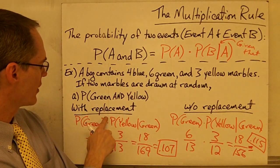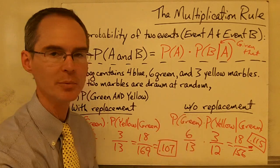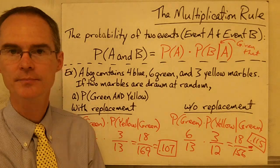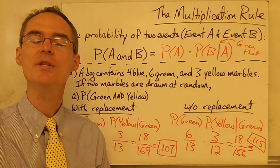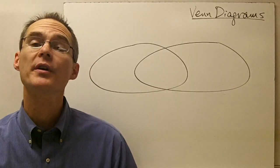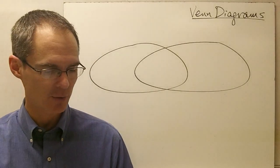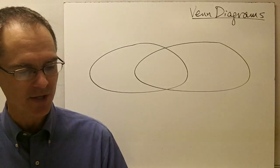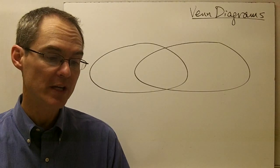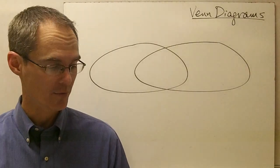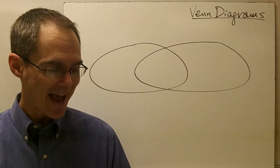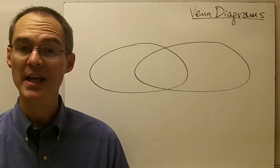Now let's look at something called Venn diagrams. The example says: 21 students at Riverside High School are allergic to either peanuts, shellfish, or both. 14 students are allergic to peanuts, and 12 are allergic to shellfish. How many are allergic to both peanuts and shellfish?